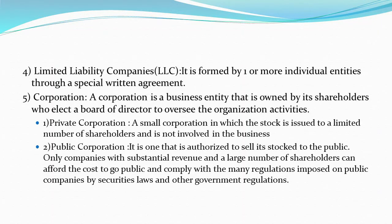The last one is the corporation — a business entity that is owned by shareholders who elect a board of directors to oversee the organization's activities. Corporations are of two types. A private corporation is often used to describe a small corporation in which stock is issued to a limited number of shareholders and is not available to the public. A public corporation is one that is authorized to sell its stock to the public. Most public corporations start as private enterprises.